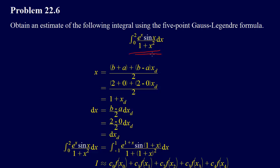The first thing that we need to do is transform the limits of integration. We have an integral from zero to two, and the Gauss-Legendre formulas are only applicable for integrals from negative one to one.